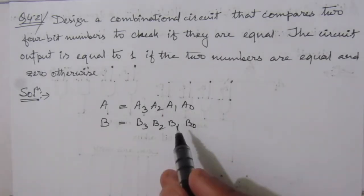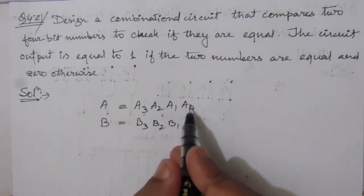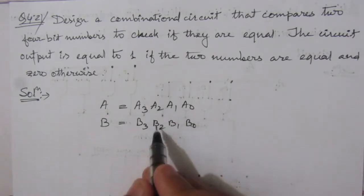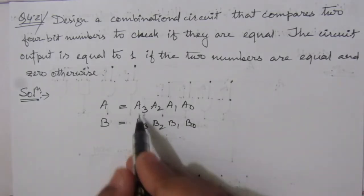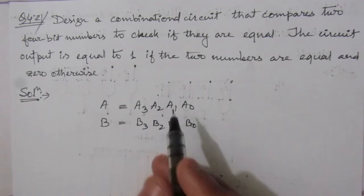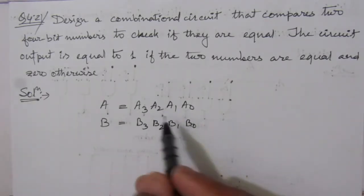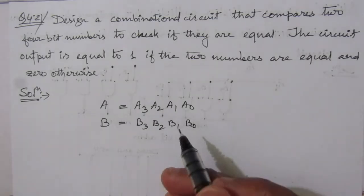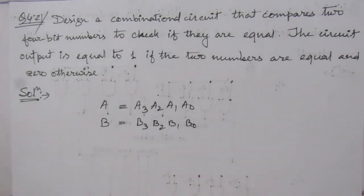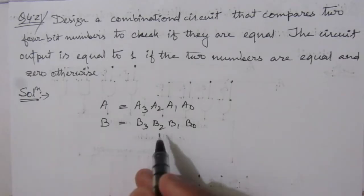That means whenever, suppose if we have 3 bits equal to their respective bits, but not the fourth one, then these two numbers will not be equal. For these two numbers to be equal in value, all of them should be equal to the respective bits from the second number.